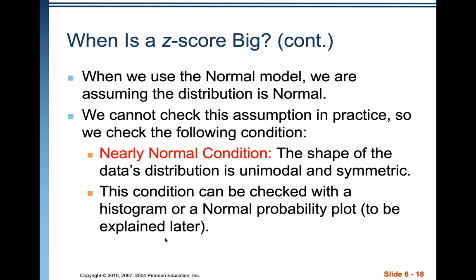When we use the normal model, we are assuming the distribution is normal. We usually can't check this assumption in practice. It's great when they tell us the data come from a normal population, but if they don't, we need to check the condition. Since you're dealing with a sample, it doesn't have to be perfectly normal — it needs to be nearly normal. The shape of the distribution should be unimodal and symmetric, and we'll want to check that with a histogram, dot plot, or stem plot.